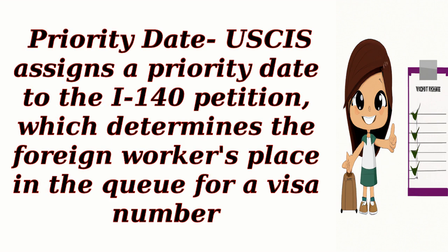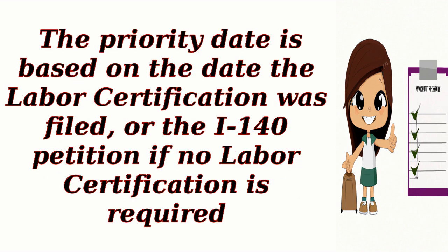Step three: Priority date. USCIS assigns a priority date to the I-140 petition, which determines the foreign worker's place in the queue for a visa number. The priority date is based on the date the labor certification was filed, or the I-140 petition if no labor certification is required.